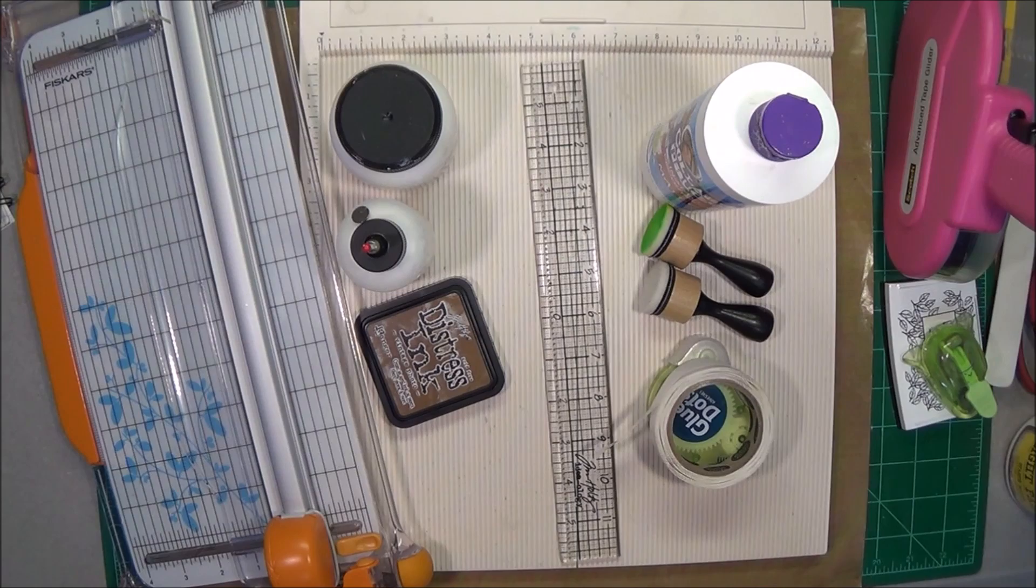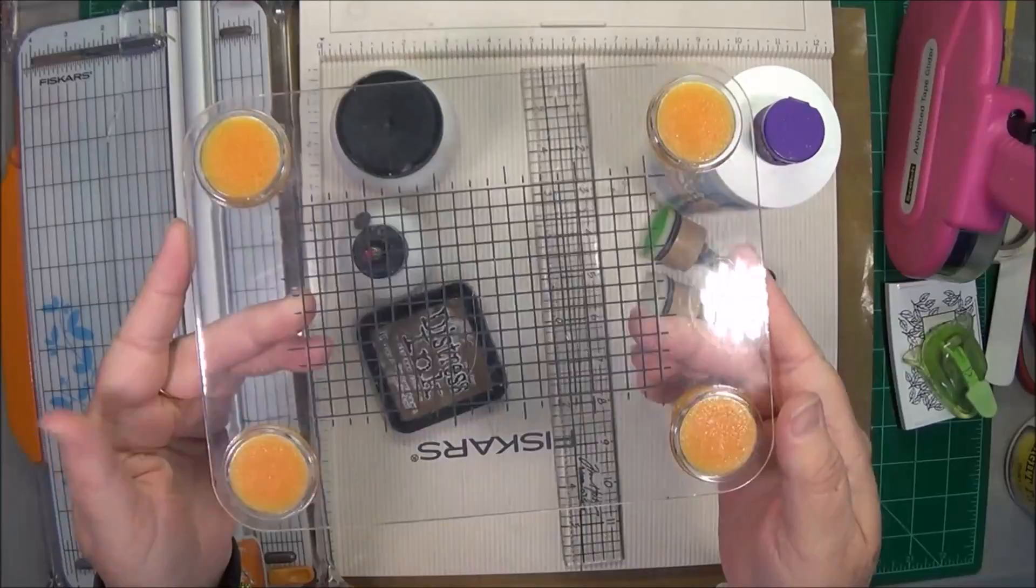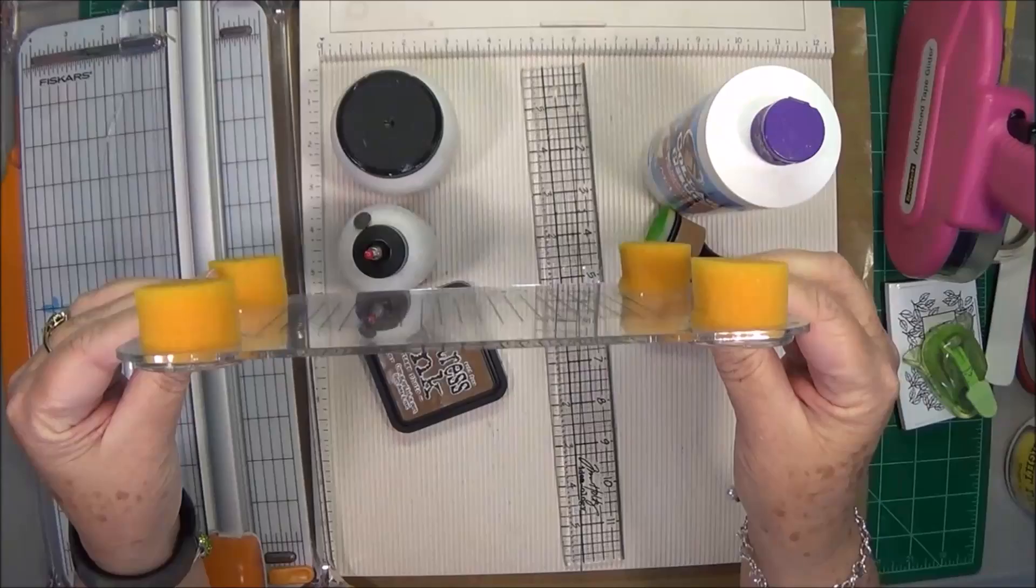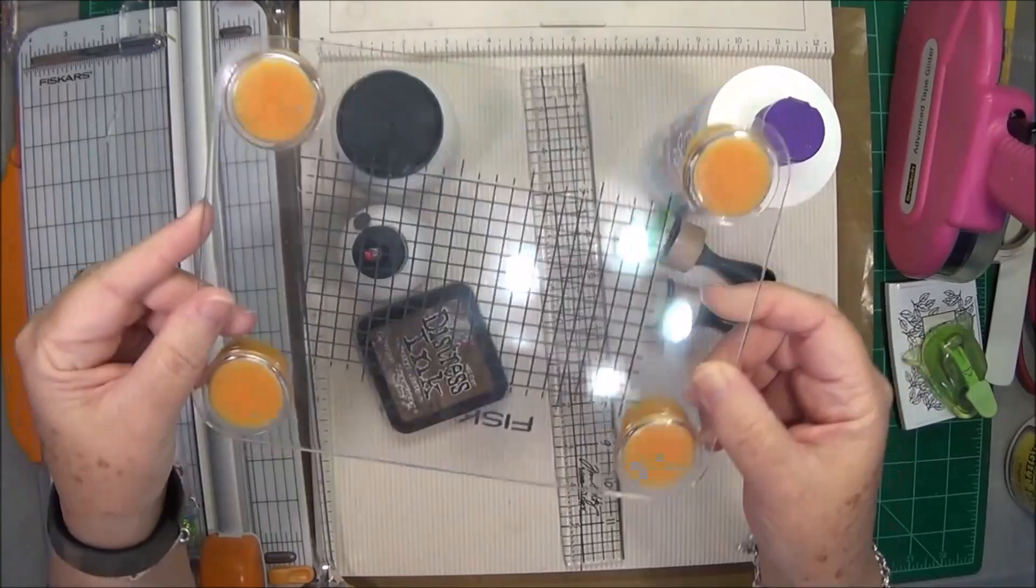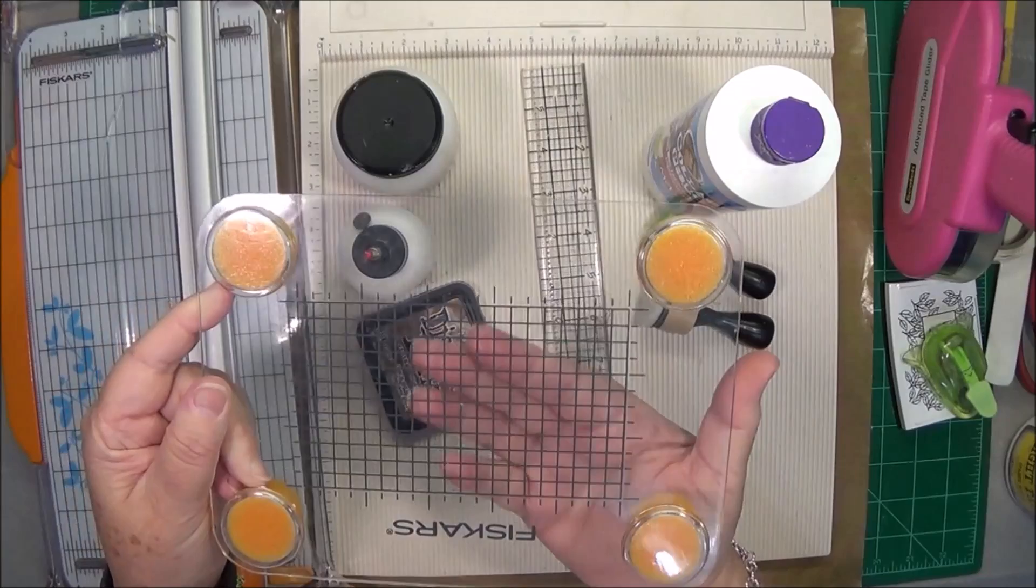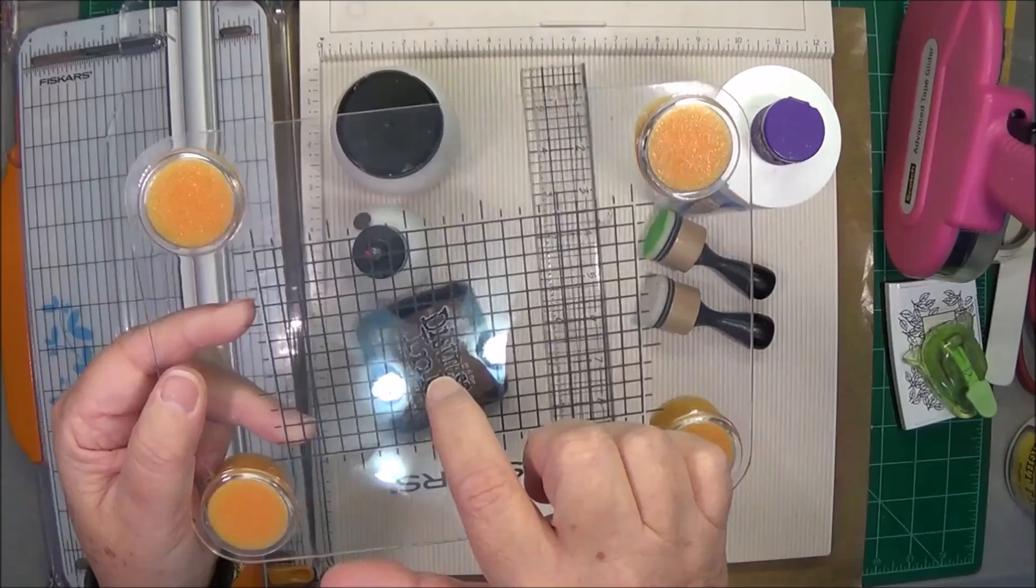Okay, my second favorite tool I would think would be this, my Fiskars Stamp Press, and this is the small one. You can get one that's even larger than this, but I absolutely love this. As you can see, it has the little cushiony corners. You can guide it down with the clear. Now, you can't use this with wood stamps, of course, but you can use it with the clear stamps. You can guide it down to your page.